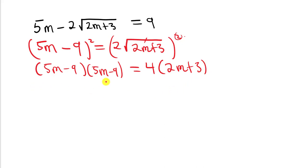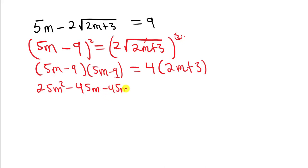For the left side, when we expand it we get 25m squared. The 5m multiplied by minus 9 gives us minus 45m; the minus 9 multiplied by 5m gives another minus 45m; and the minus 9 multiplied by minus 9 gives positive 81. On the right side, 4 multiplying 2m gives 8m, plus 12. We used the detailed expansion method here.